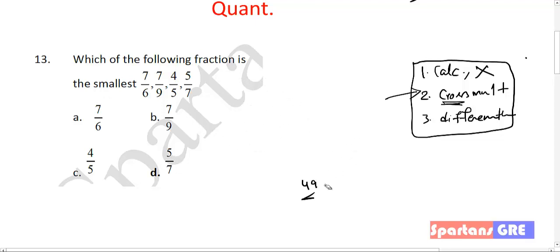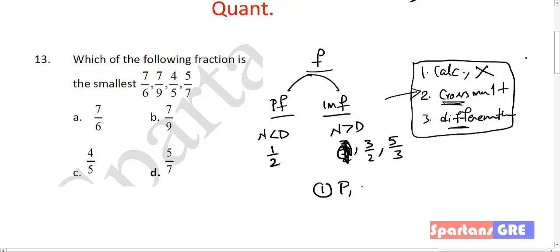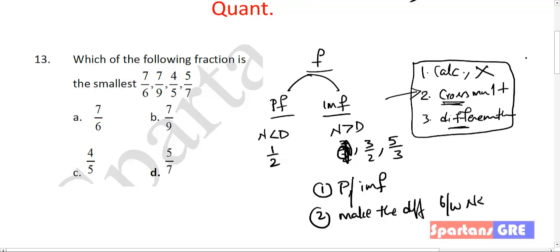Now I will tell you the differences method. Before explaining it, you need to know two types of fractions: proper fractions, where the numerator is less than the denominator, and improper fractions, where the numerator is greater than the denominator — for example 3 by 2 or 5 by 3. In the differences method, the first step is to identify whether the fractions are proper or improper fractions. The second step is to make the differences between numerator and denominator equal across all fractions.